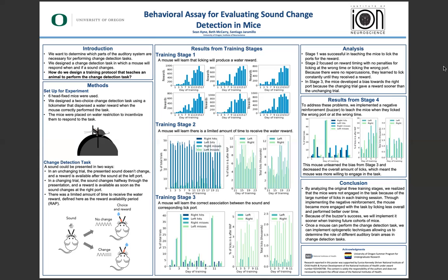In stage three, I taught the mice the correct association between the sound and the corresponding lick port. I incorporated a silent penalty so when the mouse did something wrong, the trial would end without a reward and a new one would begin. In the first graph for stage three, I found that the number of missed trials had increased in comparison to stage two and there was a significant decrease in the number of trials that were getting correct, to the point where they were only getting a few of the changing trials correct.